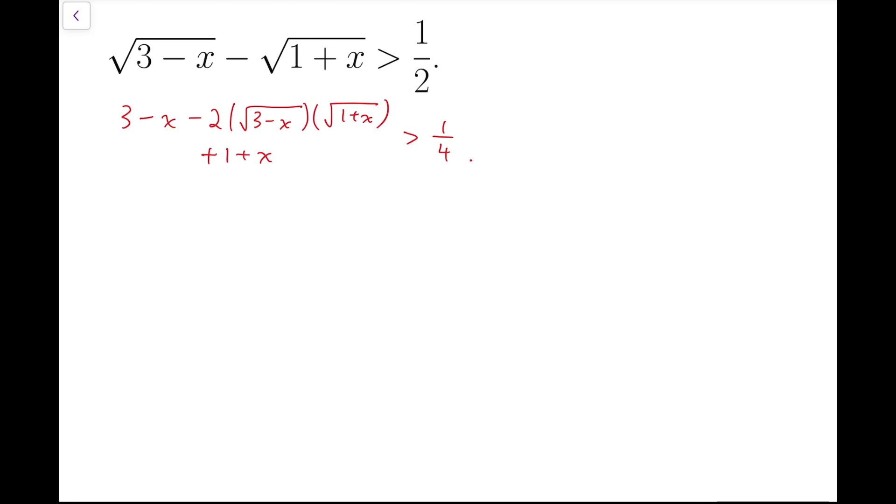So we simplify, we have 4 minus 2 times square root of 3 minus x times 1 plus x, and this will be greater than a quarter.